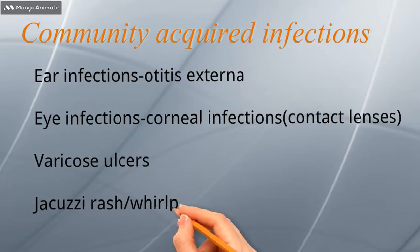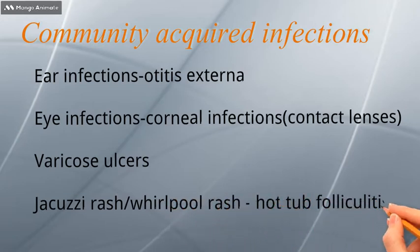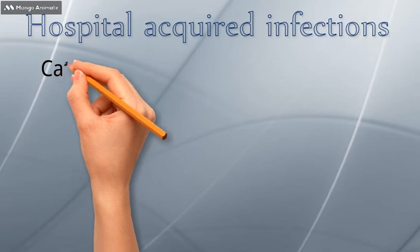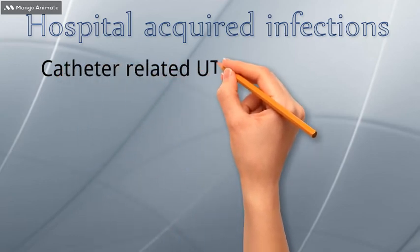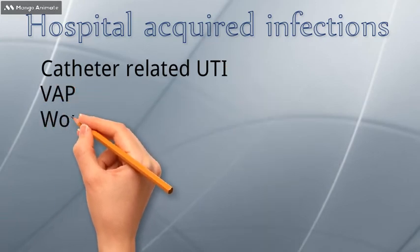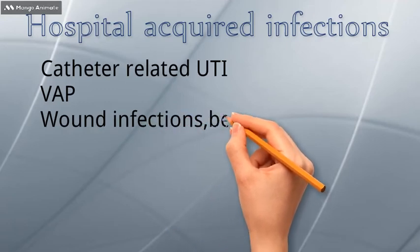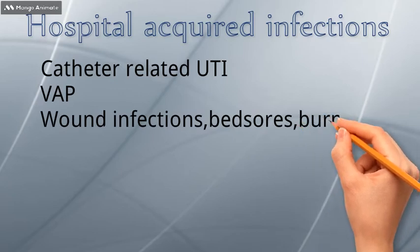It may also cause jacuzzi or whirlpool rash, which is an acute self-limiting folliculitis associated with recreational and occupational factors. Catheter-related urinary tract infection and ventilator-associated pneumonia can be cited as examples of infections caused by Pseudomonas aeruginosa in a hospital setting. Wound infections, bed sores, and burns are some other examples.